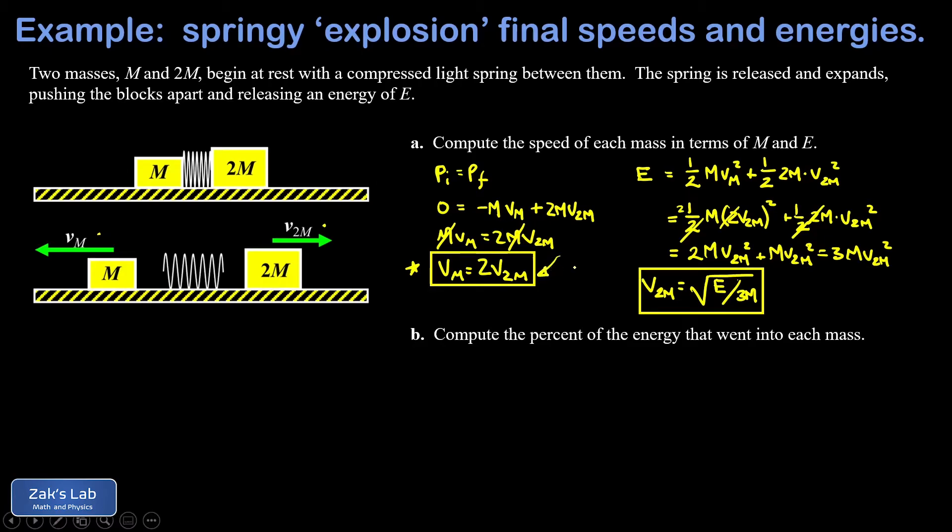Well vm is just twice v2m so I could just pop a 2 out in front of this expression but I think it looks a little nicer if we just move a 4 inside the square root instead. So vm is going to be the square root of 4E over 3m. Now in part b we want the percent of the energy that went into each mass.